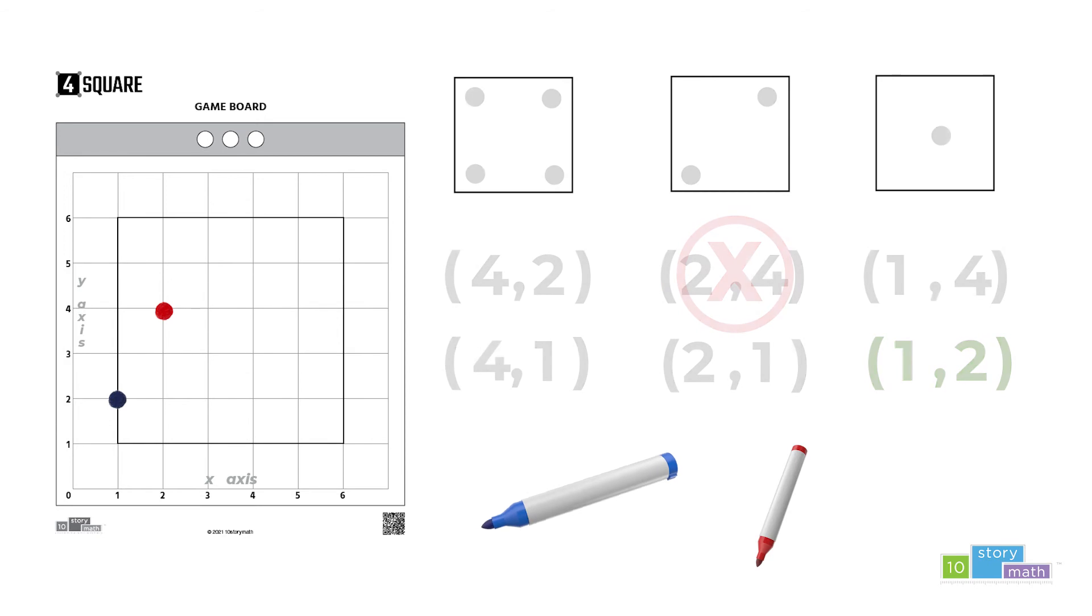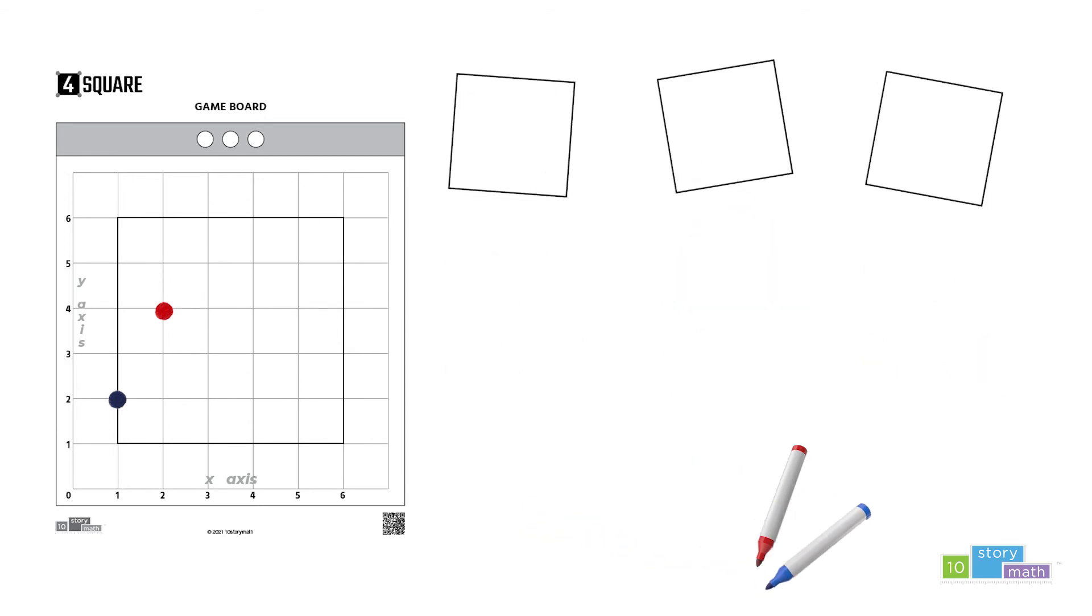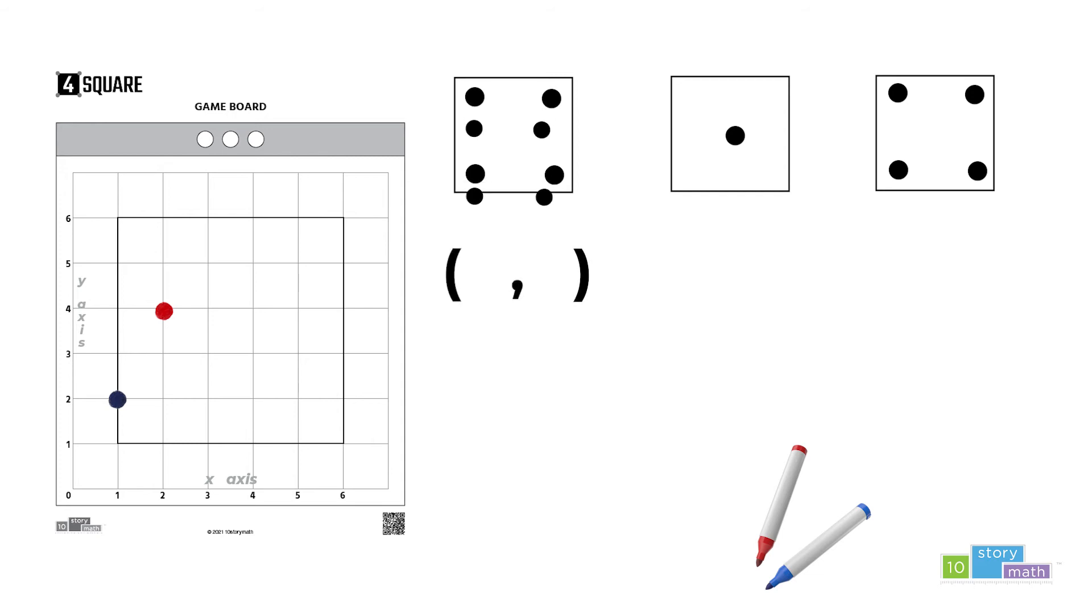And now back to red. On the red team's turn, they rolled these three dice. Only three different combinations of ordered pairs can be made from pairing up these dice. They include (4,1), (4,4), and (1,4).